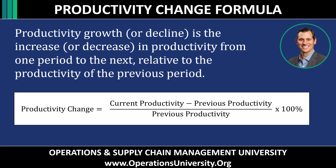Productivity growth — or decline — is the increase or decrease in productivity from one period to the next, relative to the productivity of the previous period. One thing that's tricky about this formula is that many times students will get the wrong answer if you simply plug it into Microsoft Excel due to rounding. So make sure you complete the calculation for the numerator, put that on top of the denominator, and multiply by 100 to get the productivity change.